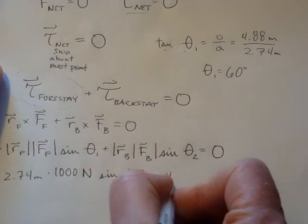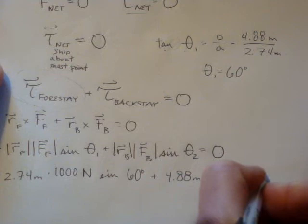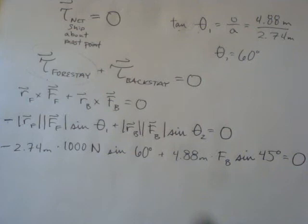So that's about sine of 60 degrees plus rb, which is 4.88 meters, times the force of the backstay, which we don't know, times sine of 45 degrees. And that's going to be equal to 0.